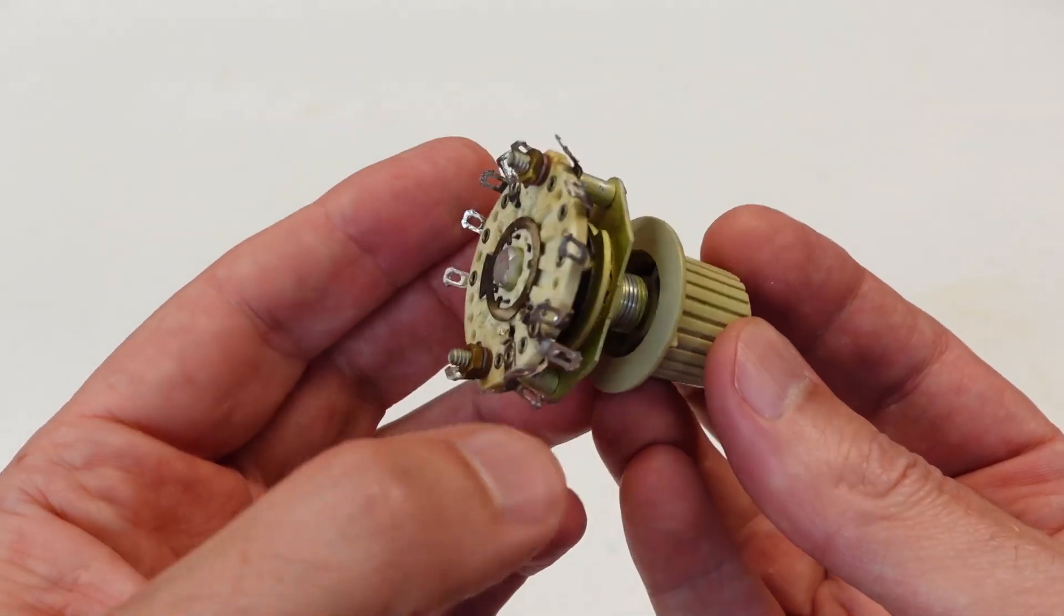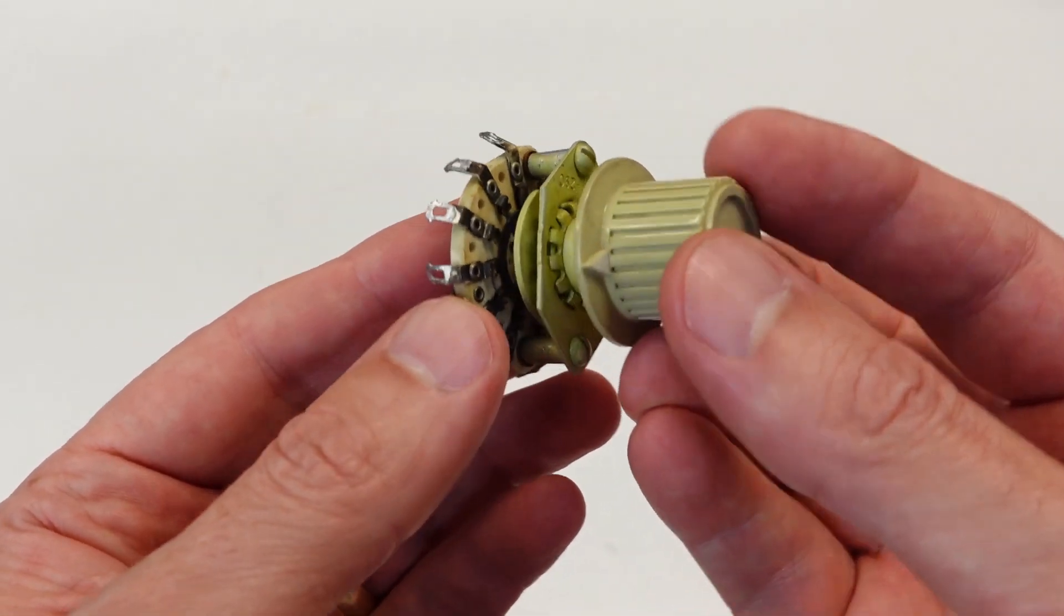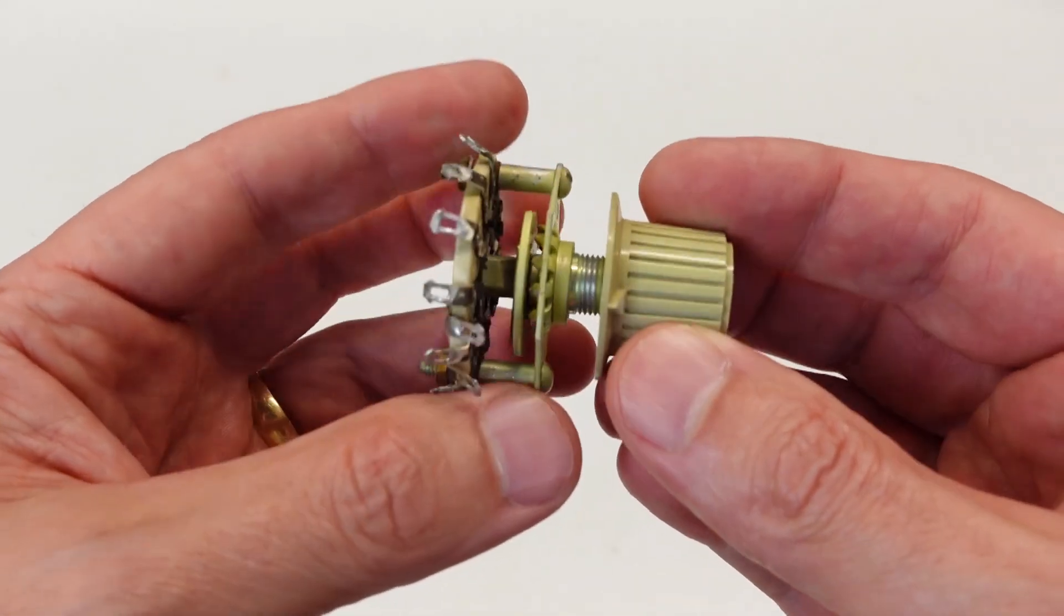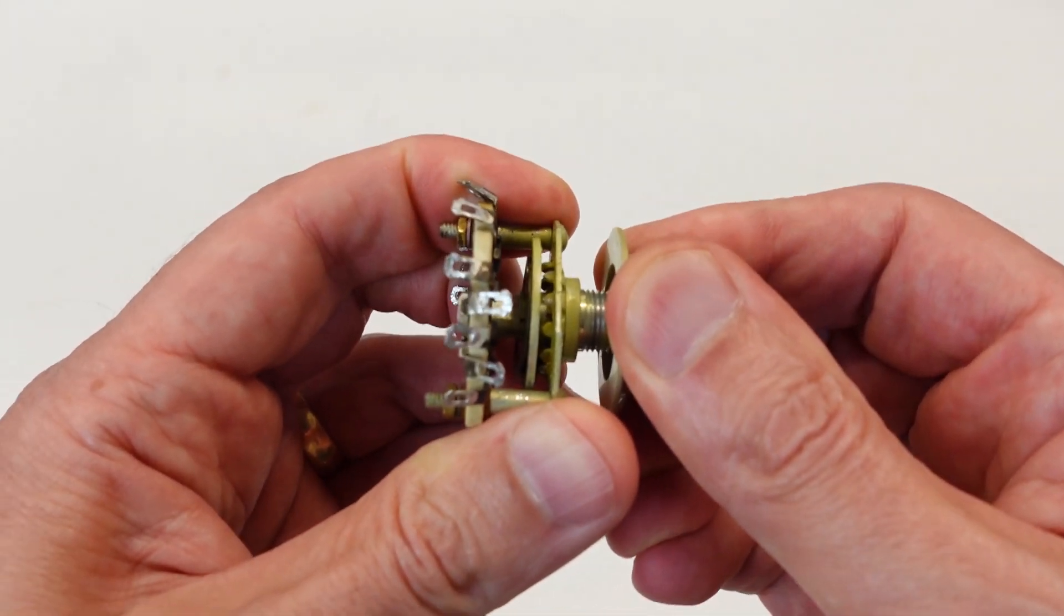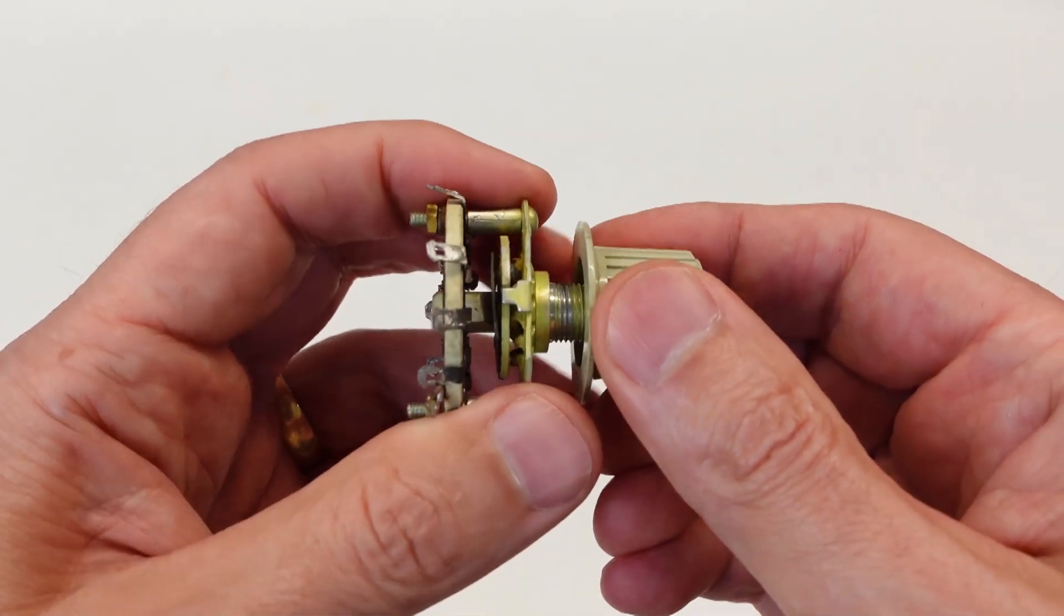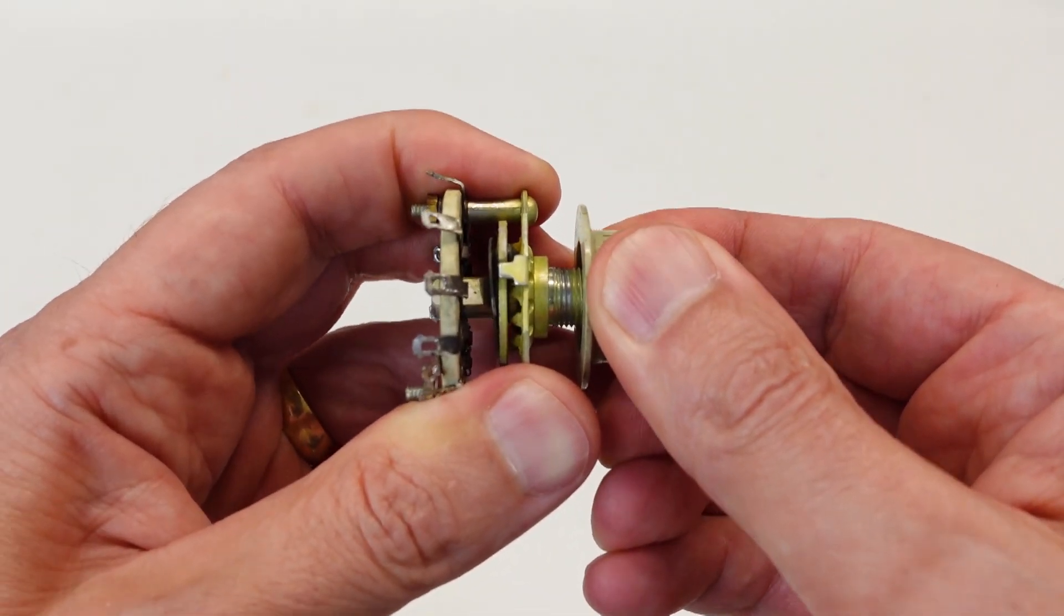I also need to do some maintenance on the crystal select switch. Normally, this is assembled at the end of a long tuning shaft, but here I've just attached one of the knobs to it. The contacts are dirty, but otherwise appear to be okay. The big problem, though, is the shaft is binding in the bushing and it barely turns.